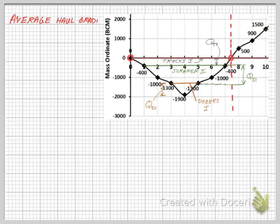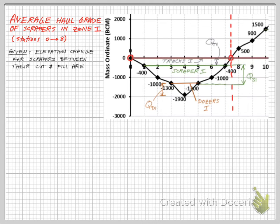The last part of this exercise requires calculating the average haul grade for the scrapers in the first zone. We are given the elevation change EC for the scrapers to be 30 meters between their cut and fill areas.